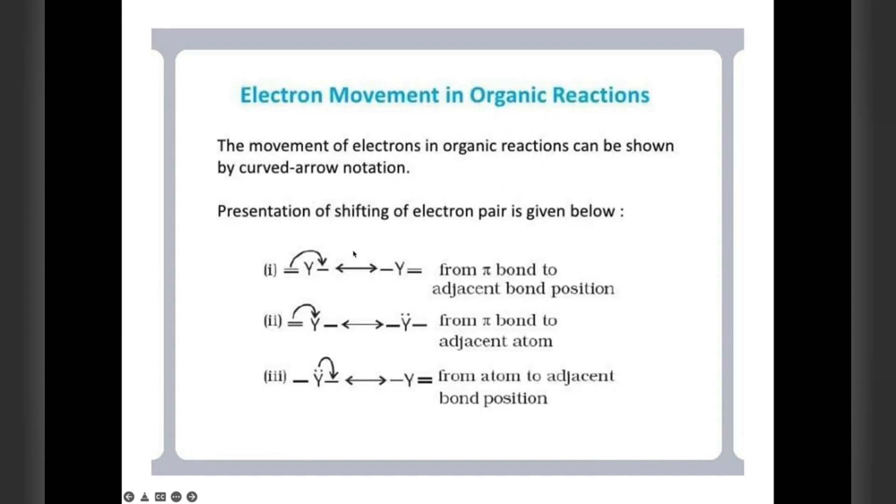You can see the electron movement in organic reactions. It can be shown by curved arrow notation. See here from pi bond to adjacent bond position, shown like this, see the arrow. Then from pi bond to adjacent atom, see here. This is adjacent bond position, this is adjacent atom, and from atom to adjacent bond. Remember the movement and shifting movement of the arrow, this is very important. Learn to differentiate between all the three.